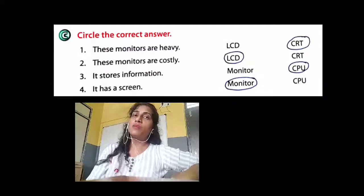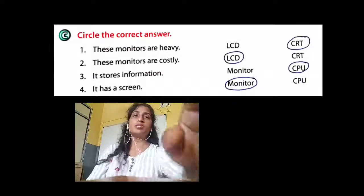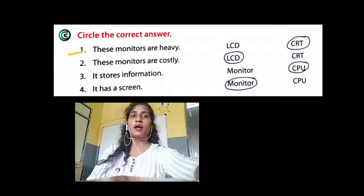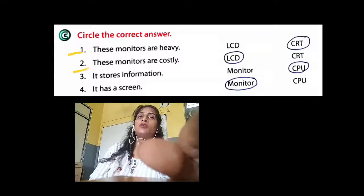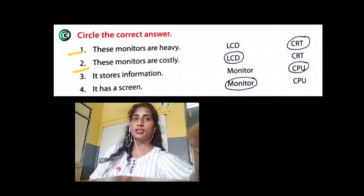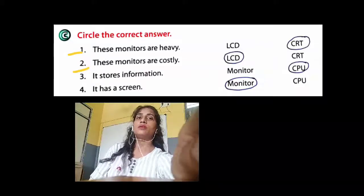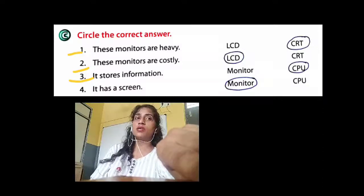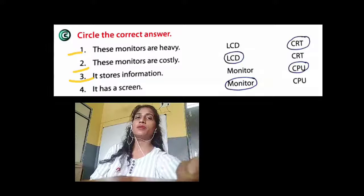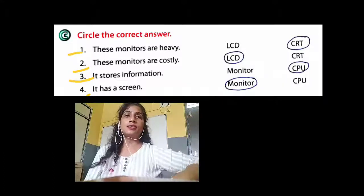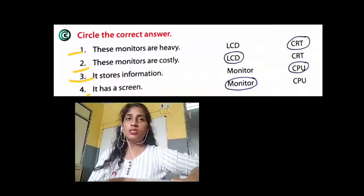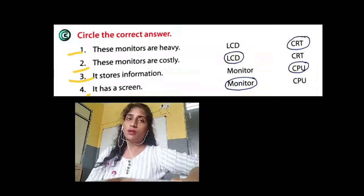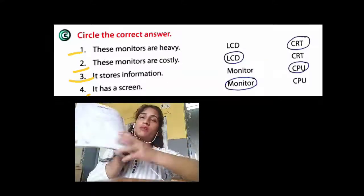I will show the answers in the next slide. These are the answers: first — these monitors are heavy, answer is CRT; second — these monitors are costly, answer is LCD; third — it stores information, answer is CPU; fourth — it has a screen, answer is monitor. Write down and circle these answers in your computer textbook on page number 25.